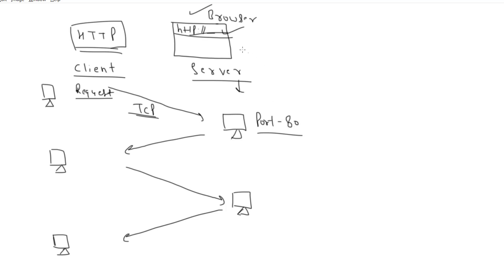First, it checks with the server whether the site is running on port 80. Once confirmed, there is an acknowledgment step. After that, the client asks for the actual resource — for example, some API. The client sends that request to the server, and then the server returns the response. This is how communication happens in HTTP between client and server.